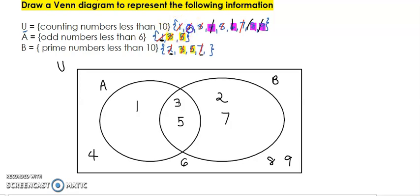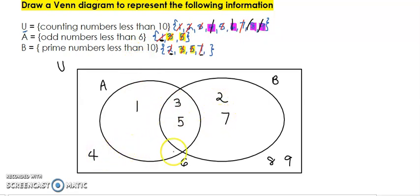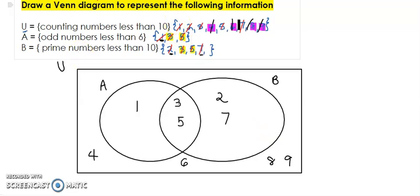My suggestion is to count how many members are in the universal set and ensure you have the same amount in your diagram. The universal set has 1, 2, 3, 4, 5, 6, 7, 8, 9 — nine members. And counting in the diagram: 1, 2, 3, 4, 5, 6, 7, 8, 9. We have all our members, so we know that we are correct. I hope this helps.